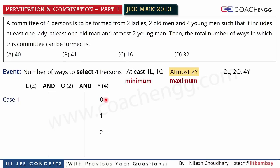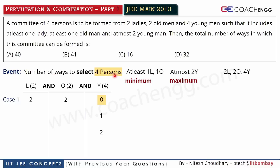Now I have fixed Y, and according to that I will select four persons. So if I take Y = zero — if I select zero young men — then in what ways can I select ladies and old men such that the sum equals four? We can notice here there are two ladies and two old men available, so we can form the committee.